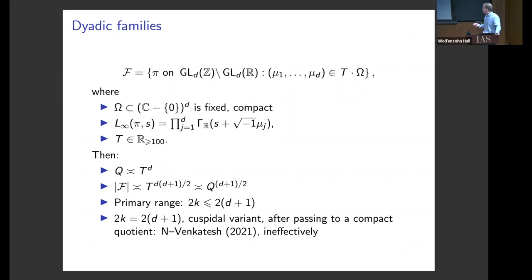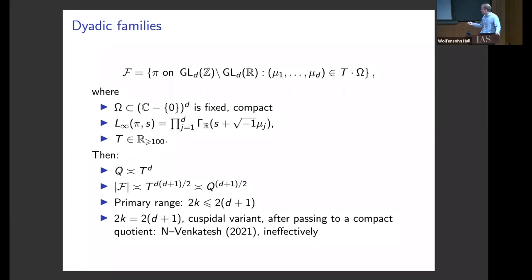For general D with these dyadic families, the one result we have is in a paper I wrote a few years ago concerning the endpoint case where the exponent is as big as you'd hope. But it's for the custodial variant of the problem — not taking a high power but a custodial twist — and moreover we're passing through a compact quotient, working with things on some anisotropic unitary group or orthogonal group. In that case, we get an ineffective estimate for the analog of the second moment, and the proof uses Ratner theory, which is the source of the ineffectivity.